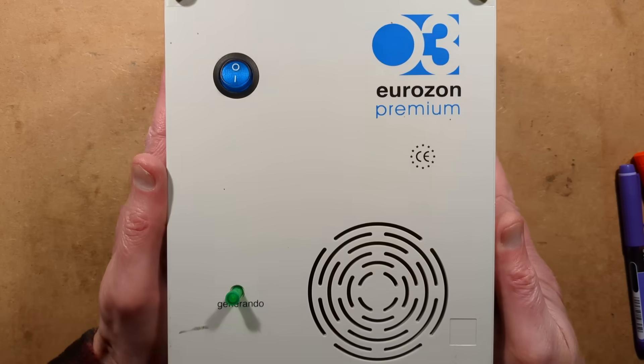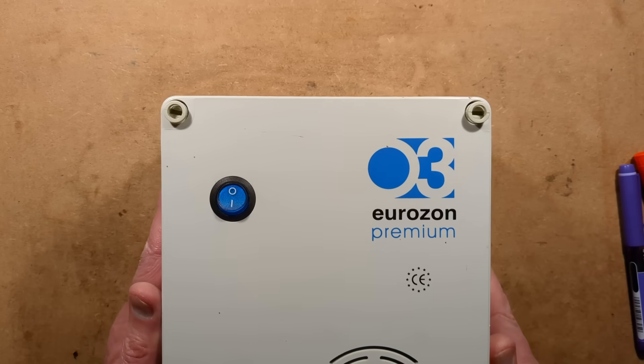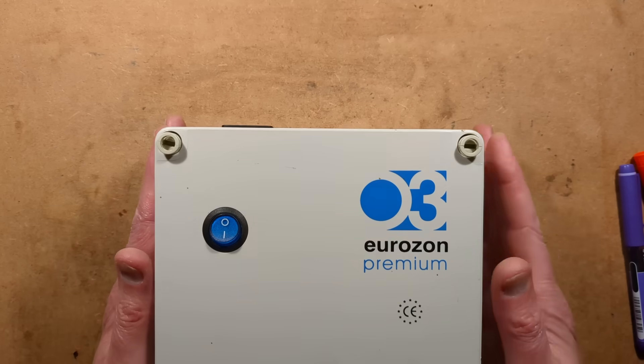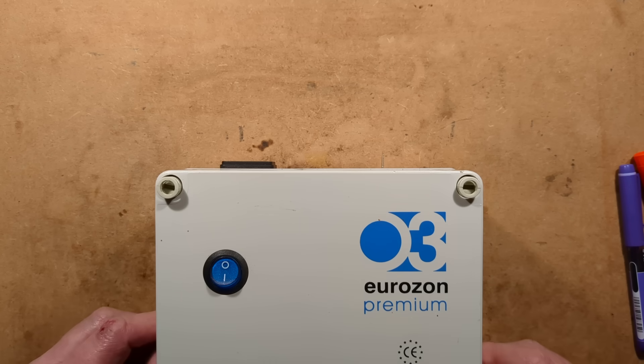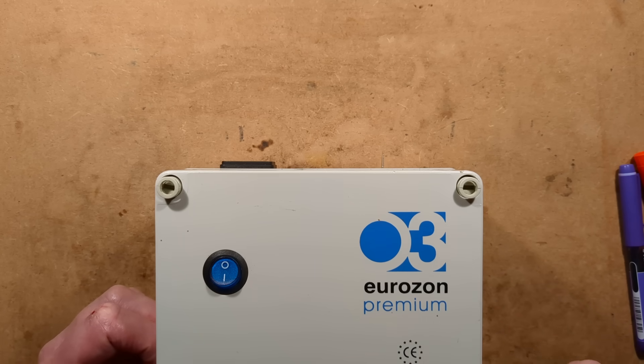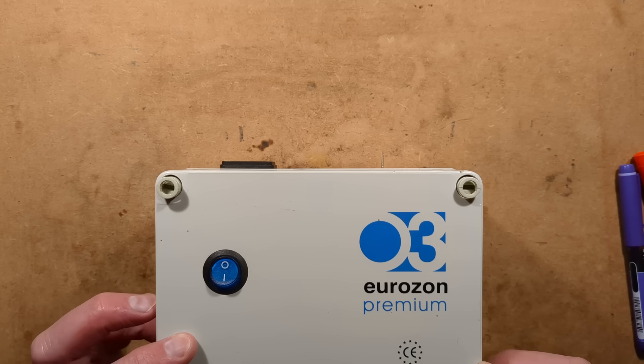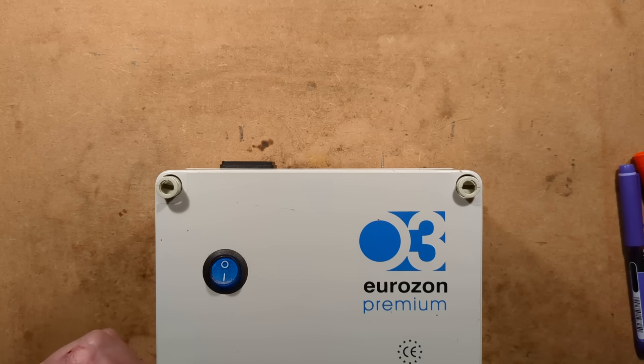But here we have it. It's quite a nice unit. It's the Eurozone Premium, but it's a much older model, because they still sell them apparently, but the modern ones look somewhat more stylish. They've got a more refined custom case with lots of custom punching of the louvers on it. I wonder what circuitry they use inside now. But anyway, that's it. The inside of the Eurozone Premium O3 Ozone Generator. It's very interesting.